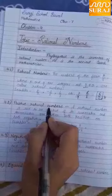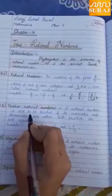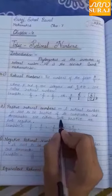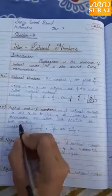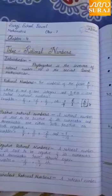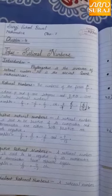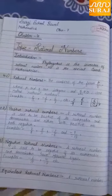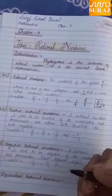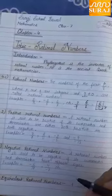Positive rational numbers: A rational number is said to be positive if its numerator and denominator are either both positive or both negative — that is, if its numerator and denominator have the same sign.